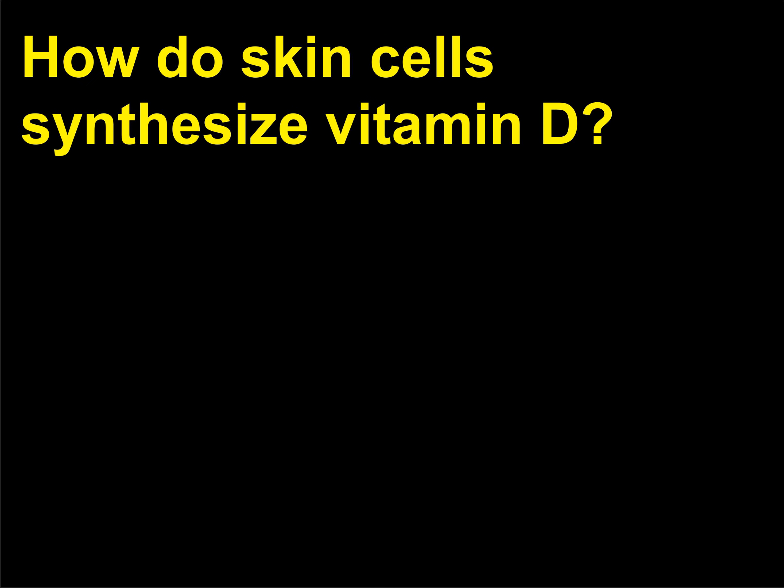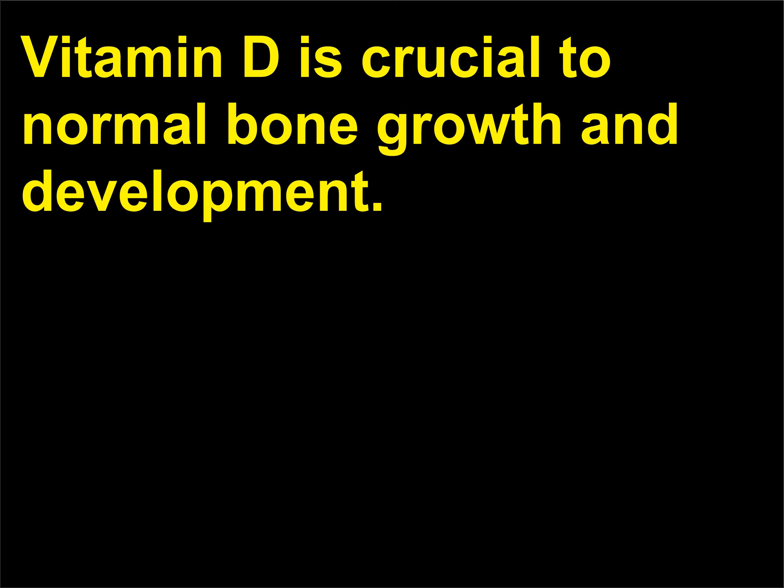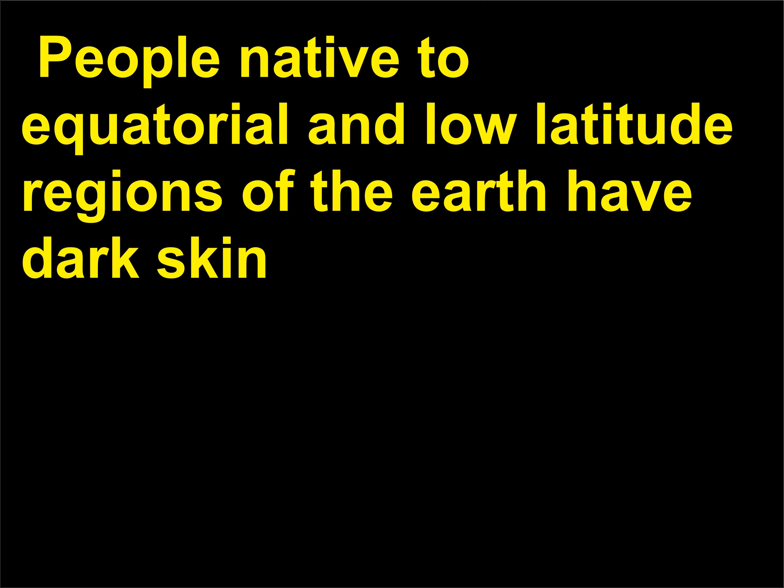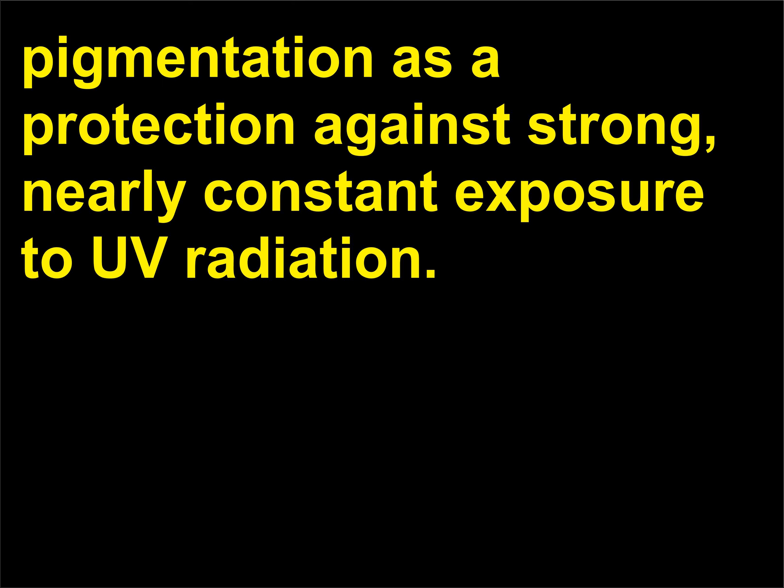How do skin cells synthesize vitamin D? Vitamin D is crucial to normal bone growth and development. When UV light shines on a lipid present in skin cells, the compound is transformed into vitamin D. People native to equatorial and low-latitude regions of the earth have dark skin pigmentation as a protection against strong, nearly constant exposure to UV radiation.